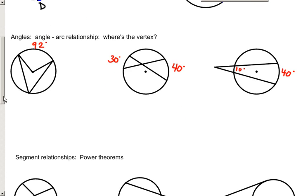Moving on to the angles of a circle — their measures depend on the arcs that they intercept. There are essentially four different types of angles. The first is an angle whose vertex is located at the center, known as a central angle. When the vertex is at the center, the angle measure equals the arc measure.